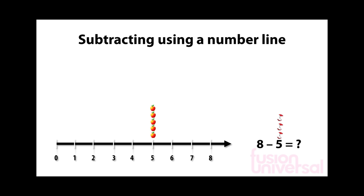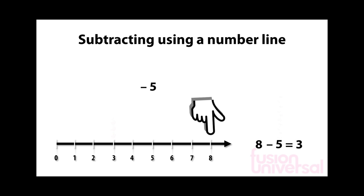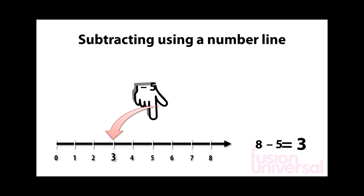The overall effect of subtracting or taking away 5 from 8 is to move 5 to the left, giving us the answer 3. So 8 subtract 5 is equal to 3.